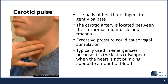Next is the carotid pulse. Using the pads of the first three fingers, gently palpate the carotid artery between the sternocleidomastoid muscle and the trachea. Apply gentle pressure to feel the pulse without overpressing, which could cause vagal stimulation or compromise blood flow to the brain. The carotid pulse is used in emergencies because it is the last pulse to disappear when the heart is not pumping adequate blood. Never palpate both carotids at the same time.